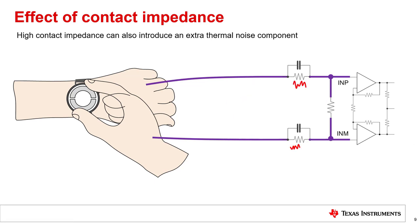The second undesirable effect of the contact impedance is the thermal noise introduced by the resistive part of the contact impedance. The portion of this noise that is within the ECG signal band results in an unavoidable reduction of the SNR of the ECG signal. However, the portion of this noise that is out of the ECG signal band should be band-limited before conversion by the ADC to prevent additional alias noise from affecting the SNR. For this reason, it is essential to have a low-pass filter before the ADC, which acts like an anti-aliasing filter. Many of the TI AFEs have such a low-pass filter between the instrumentation amplifier and the ADC.